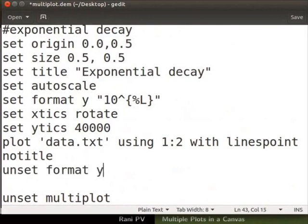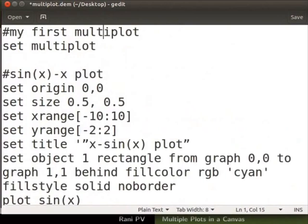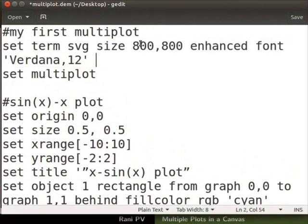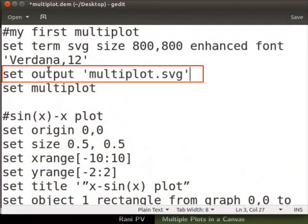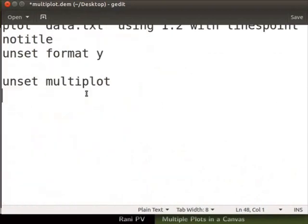Let's add commands to print the graph into an image file. Scroll up to the top of the script file. Type set term svg before starting the multiplot mode. Direct the output to a svg file as seen. These are done before the multiplot command is executed. Scroll to the bottom of the script file and unset the output. This is done after we unset the multiplot mode. Enter the command unset space output.